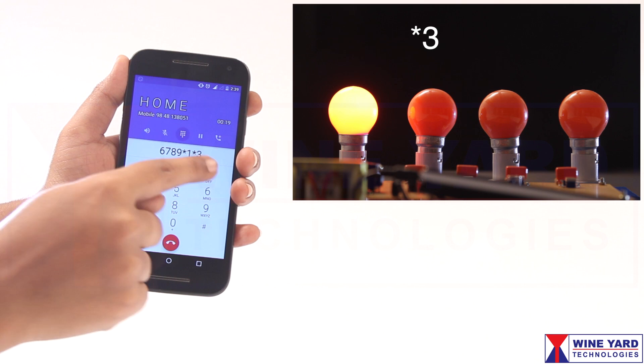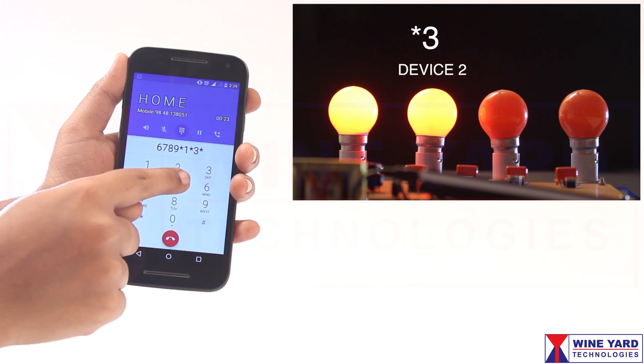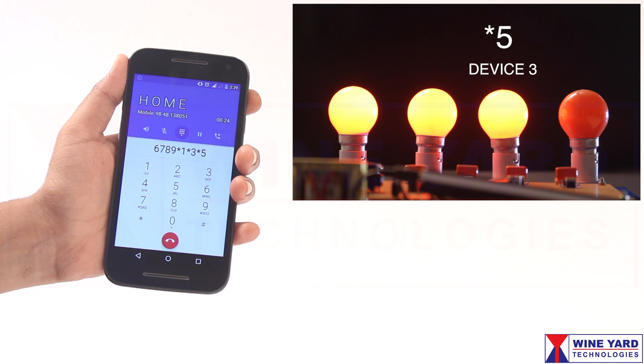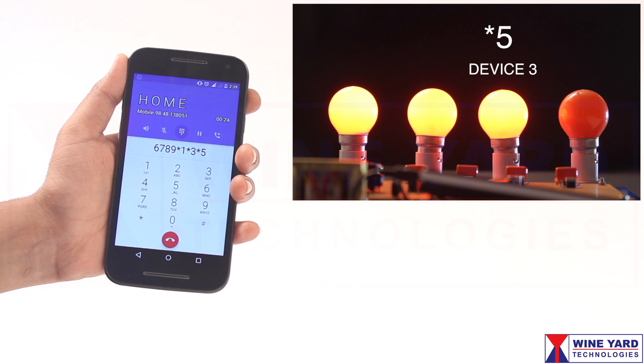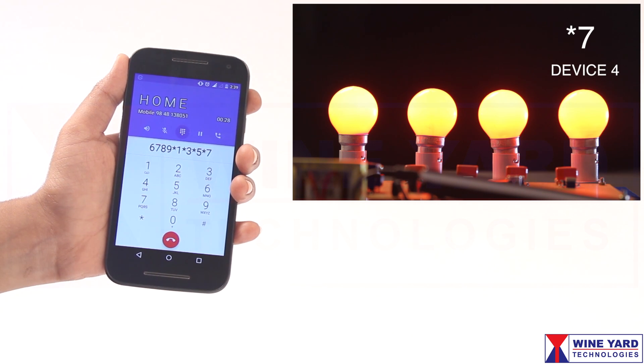Enter *3 to make device 2 ON. Now again enter *5 to make device 3 ON. Same like that, enter *7 to make the 4th device ON.